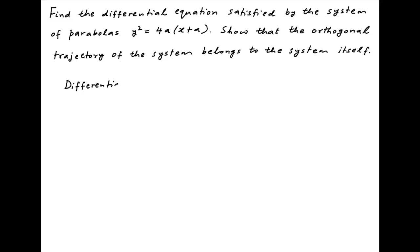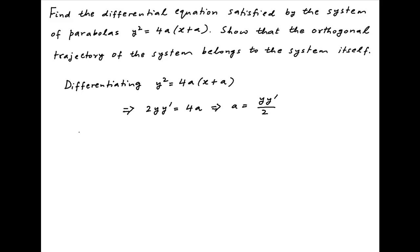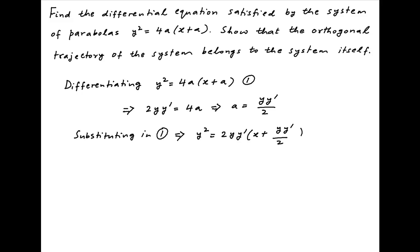Differentiating the given equation of the system of parabolas y² = 4a(x + a), we get 2y·y' = 4a. This implies that a = y·y'/2. Substituting this back into the equation of the system of parabolas, we get y² = 2y·y'·(x + y·y'/2).